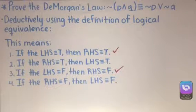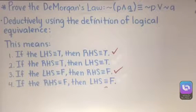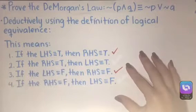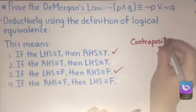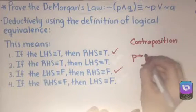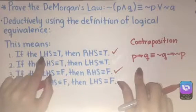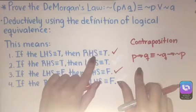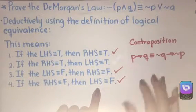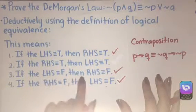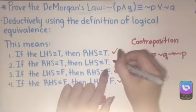We can continue to do similar proofs for number two and number four. However, we can simply use the law of contraposition to find both. Contraposition states that P implies Q is logically equivalent to the negation of Q implies the negation of P. So using this, number one — if LHS is true then RHS is true — its contrapositive is number four: if RHS is false then LHS is false, which is also valid. And number three — if LHS is false then RHS is false — its contrapositive is number two: if RHS is true then LHS is true, which is also a valid argument.